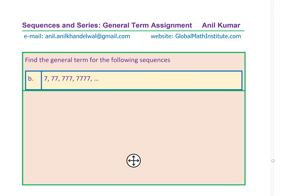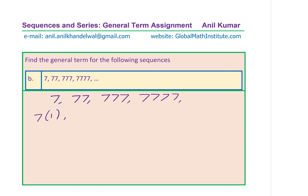It is very clear from here that we could write this pattern — 7, 77, 777 — as 7 times 1, 7 times 11, 7 times 111, 7 times 1111, and so on. That is how the sequence is. Now, the strategy here is: how do we write 1, 11, 111, 1111 in a general way? That is what we are going to learn now.